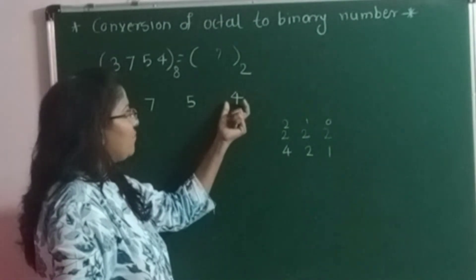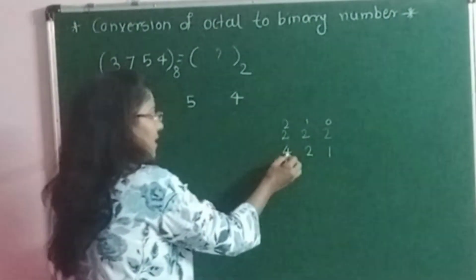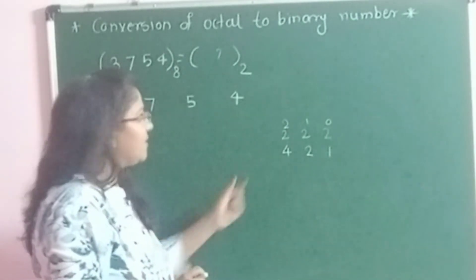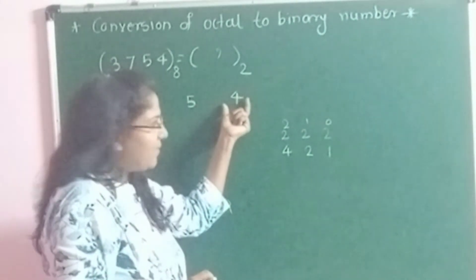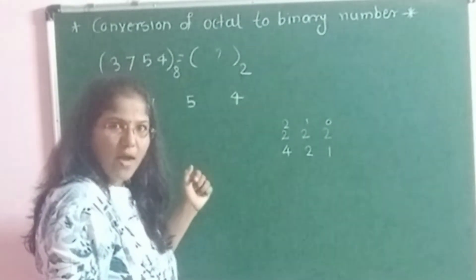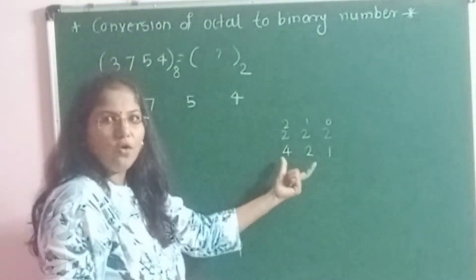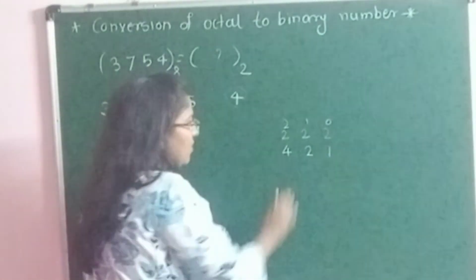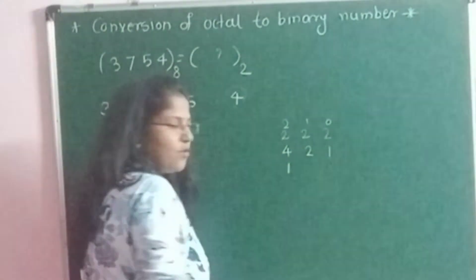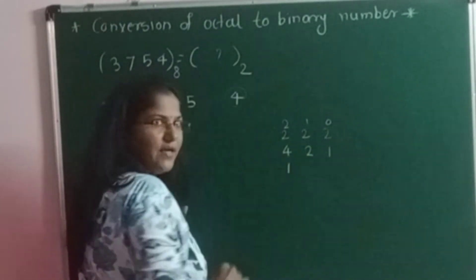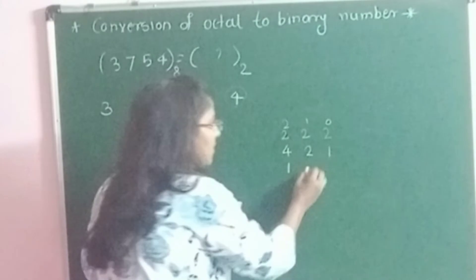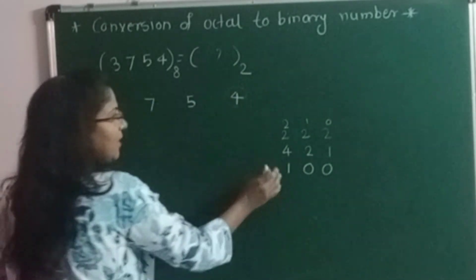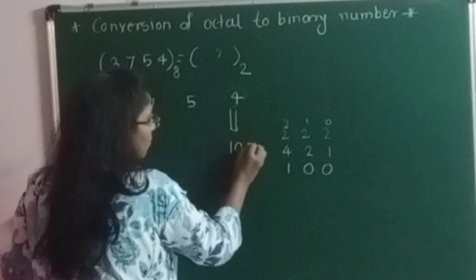How to write the binary equivalent for the digit 4? We have to consider the weighted values such that when we add them we get the result as 4. Whichever weighted values we select, below them we write 1, and for the ones we don't select we write 0. Since 4 is directly available, we select it and write 1 below it. We don't need to add any other value, so the others get 0. The equivalent 3-bit binary for 4 is 1, 0, 0.